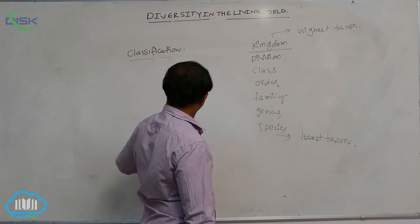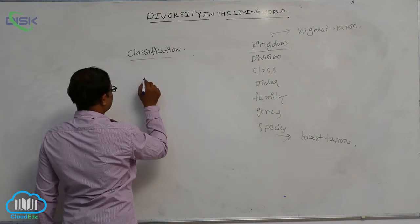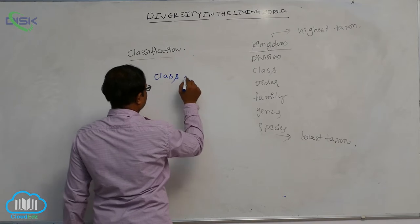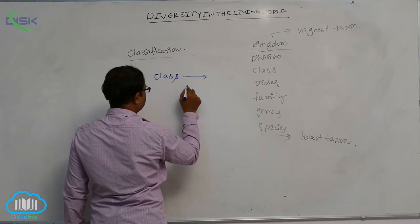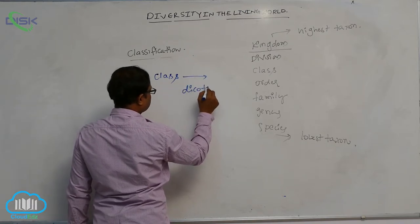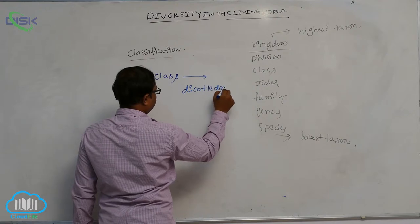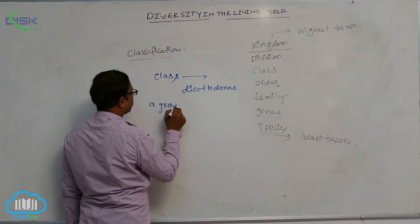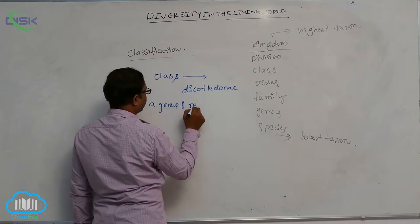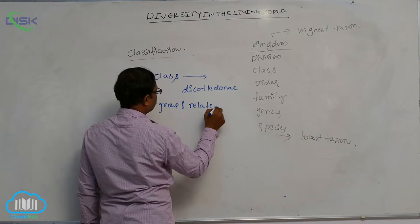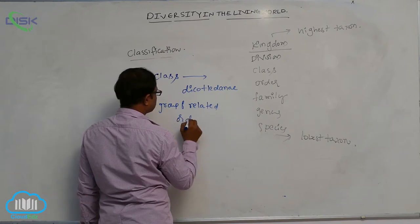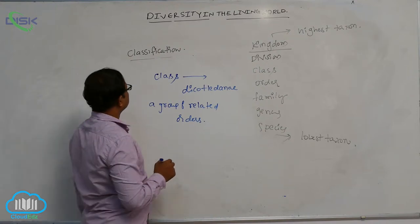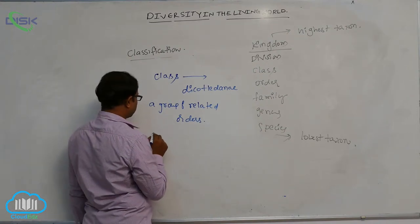After that order, class. A group of related orders is known as the class — for example, Dicotyledons. After that class, division.